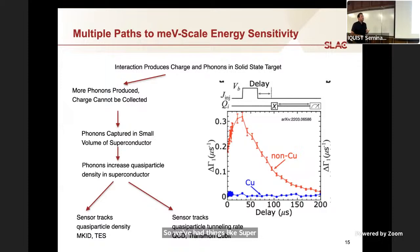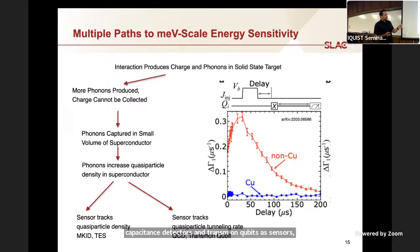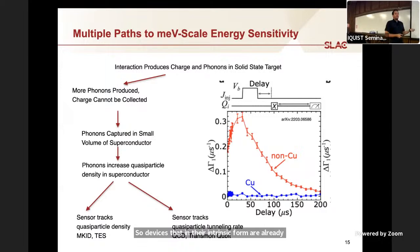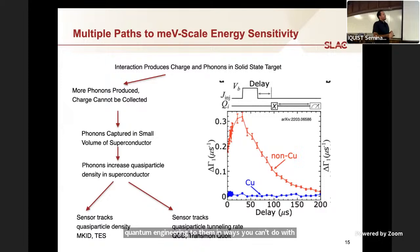Resistance tracks quasi particle density or inductance tracks quasi particle density. But what's more exciting and more promising for this regime is where the sensors track quasi particle tunneling rate. We've had things like superconducting tunnel junctions for a long time. However, there's a lot of new work looking at quantum capacitance detectors and transmon qubits as sensors. Devices that in their intrinsic form are already counting single quasi particle tunneling events. If we can mediate better transport of energy to those junctions, we can actually use them as much more sensitive sensors. They're reading out quantum events, you can manipulate their states, you can do all sorts of quantum engineering to them.